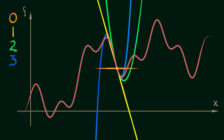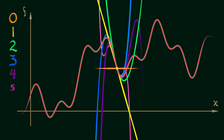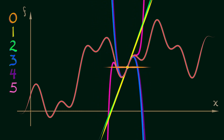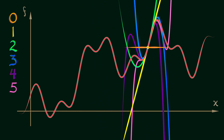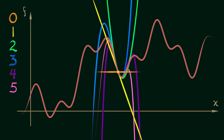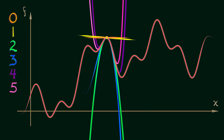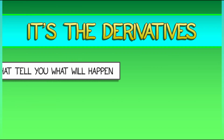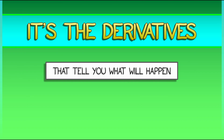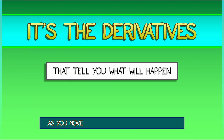Adding the higher order terms — the quadratic term, the cubic term, and beyond — gives you polynomial approximations to your function that are really good near where you're doing the expansion. It's really the derivatives that tell you what is happening as you move away from the expansion point.